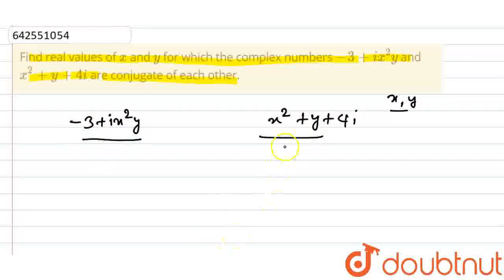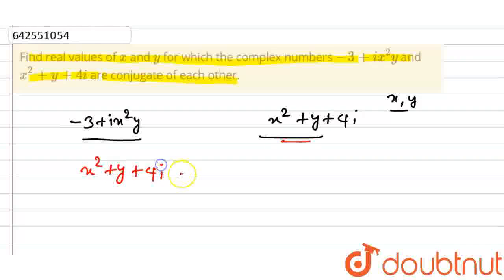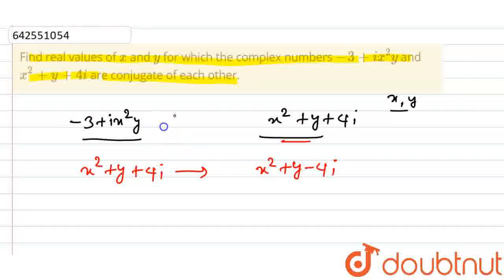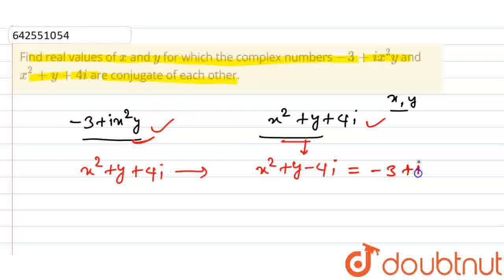So if we take the complex number x squared plus y plus 4i, then the conjugate of this will be x squared plus y minus 4i. Since both complex numbers are conjugate of each other, this conjugate is equal to minus 3 plus i times x squared times y.